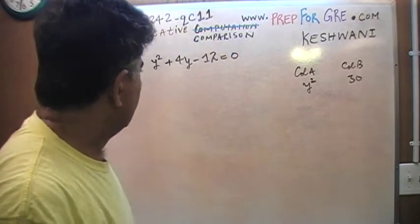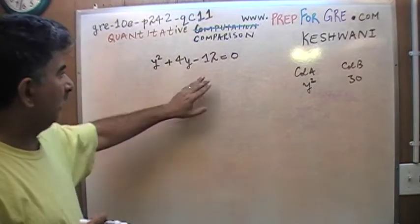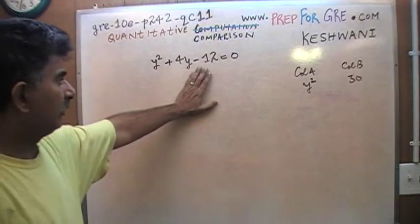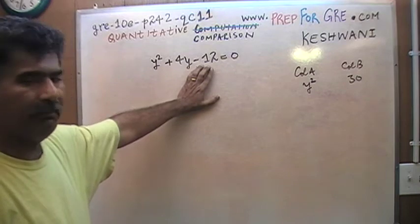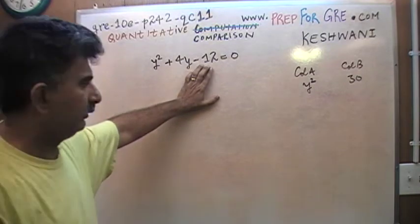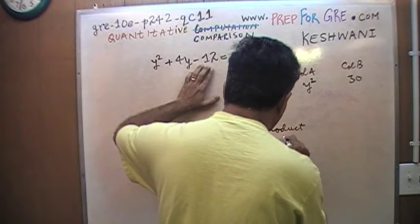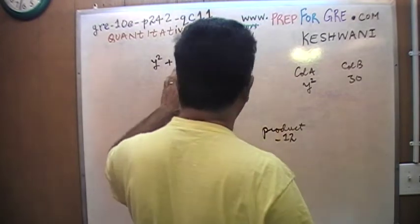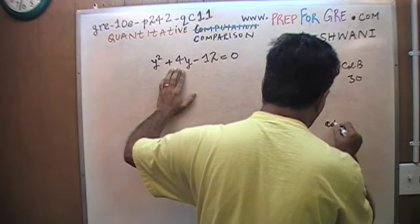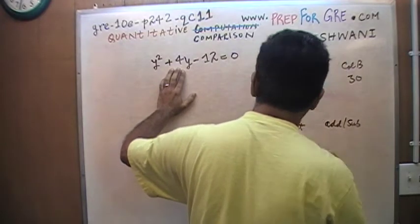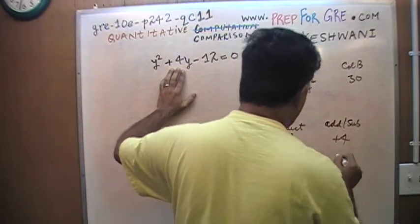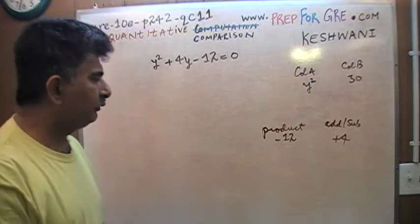Let's factorize it. How does one go about factorizing? I am looking for two numbers so that when I multiply them I get a product of negative 12, and when I add or subtract I get a positive 4. Can you think of two such numbers?